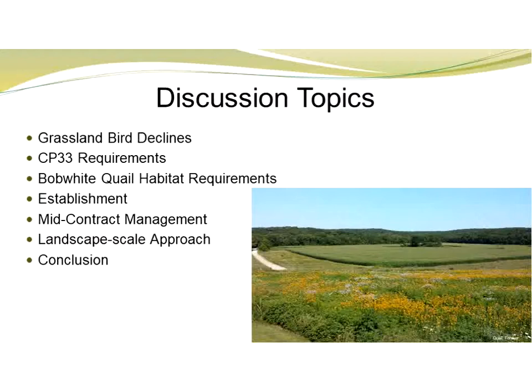The first thing I'm going to do is talk a little bit about grassland bird declines. We'll review the basics of the CP33 Habitat Buffer Program policy, and then go through a few slides showing how those CP33 policy requirements tie to bobwhite quail habitat. We'll hit on some establishment hints and go over the importance of mid-contract management, and briefly touch on the importance of addressing grassland on the ag landscape using a landscape scale approach.